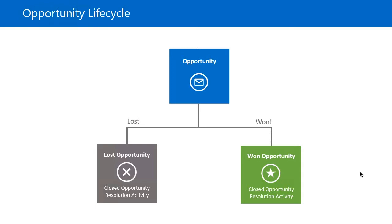As part of the close process for opportunities, a special type of activity is generated referred to as a resolution activity. This resolution activity helps other non-sales users see the types of activities beyond phone calls, emails, and appointments that are taking place regarding a particular customer. Users can open these activities and see information regarding when the activity took place, the actual sales value, why they may have been won or lost, as well as who the competitor was.